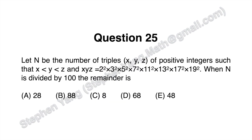Now let's get into question 25. The question asks: let n be the number of triples of positive integers such that x is less than y is less than z, and x times y times z equals 2 squared times 3 squared times 5 squared times 7 squared times 11 squared times 13 squared times 17 squared times 19 squared. Find the remainder when n is divided by 100.